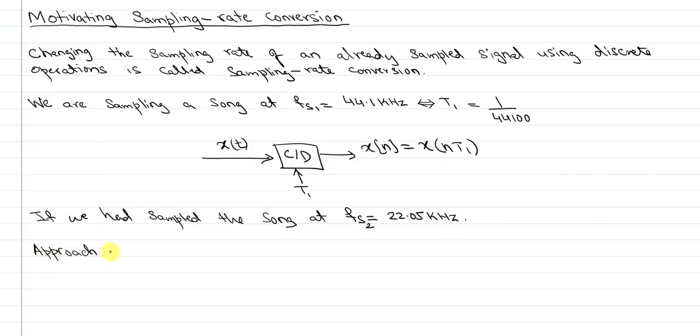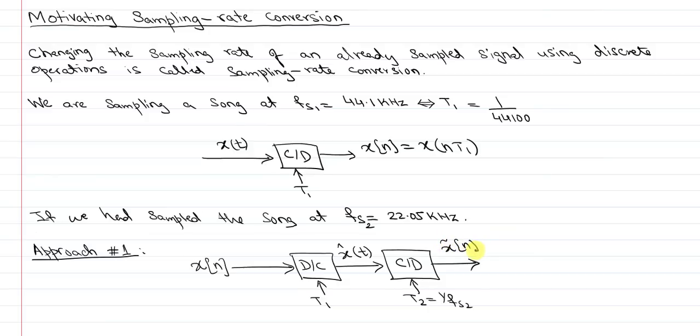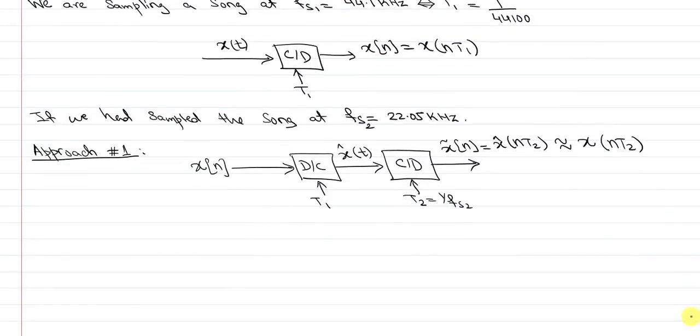Approach 1, which actually we do not want to do, is the following. I get x[n] that I had originally sampled. Then I actually use that to construct a continuous time signal x hat of t. The hope is that this x hat of t is very close to x of t. Then I resample it using analog hardware using the new sampling frequency t2, which is 1 over fs2, to get x tilde of n, which is x hat of n*t2. If the reconstruction was perfect, that is approximately equal to x of n*t2.